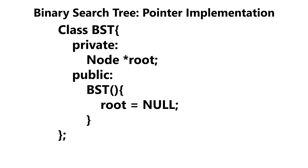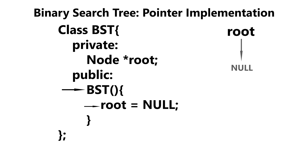Moving on to our main class, we have a private data member called root. This is going to be the pointer that points to the root of our binary search tree. And we have our no argument constructor, which is going to initialize the root to null to symbolize that our tree is empty.